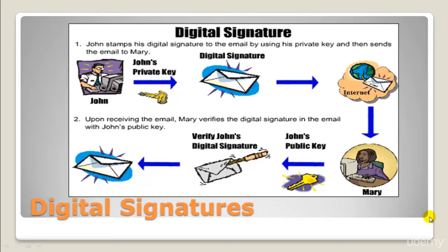In a random oracle model, we can model a digital signature algorithm as a random function that reduces any input message to a one-way hash value of fixed length, followed by a special kind of cipher block in which the algorithm will perform the operation in one direction known as signature for only one principal, while in the other direction it will perform a verification for anybody.